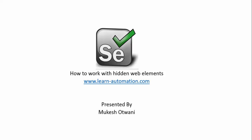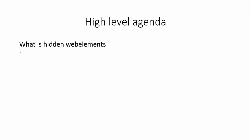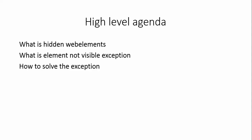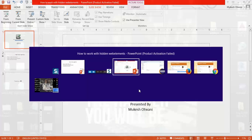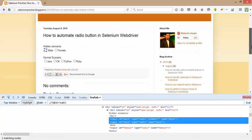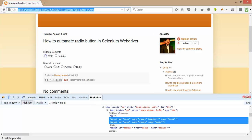Let me show you the high level agenda. We'll discuss what hidden web elements are and why in some applications you will find them. You will notice that once you start working on hidden web elements, Selenium will throw an ElementNotVisibleException. We'll see some solutions to overcome that. Let me go to Eclipse — I have one sample application ready.